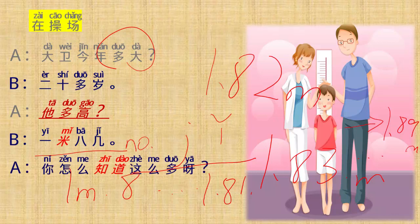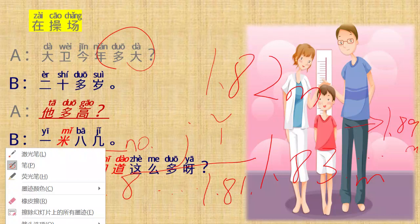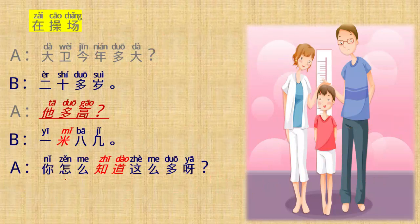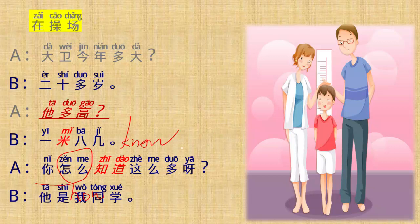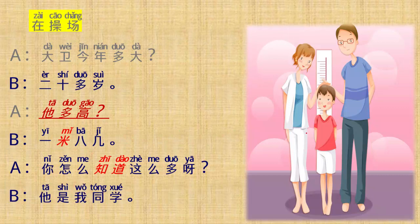你怎么知道这么多呀. Why do you know so much? 你怎么 知道这么多? So many. 他是我同学, he's my classmate. 好 第四 text four 在房间, in bedroom.